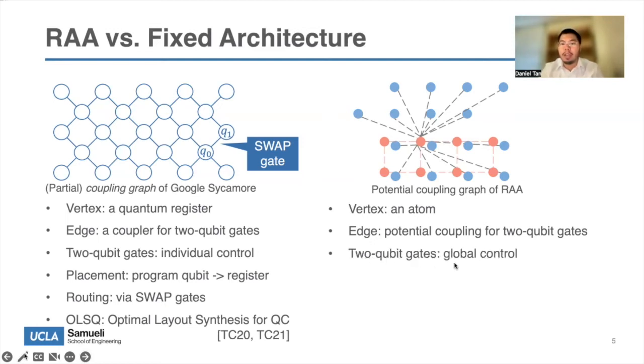But here, the downside is that we only have global control of the two qubit gates. Once we turn on the record laser, all the pairs that are closed will have the two qubit gate. We cannot say, we don't want this pair, actually. Can we turn it off? No, we cannot have individual control. And the placing is from atom to a specific location in the 2D plane. And routing is done by the AOD movements. And this work is called OSCRA, which is an extension of OSC.